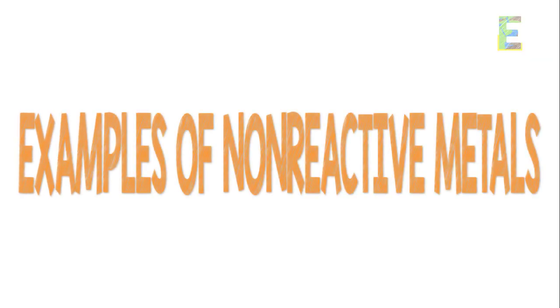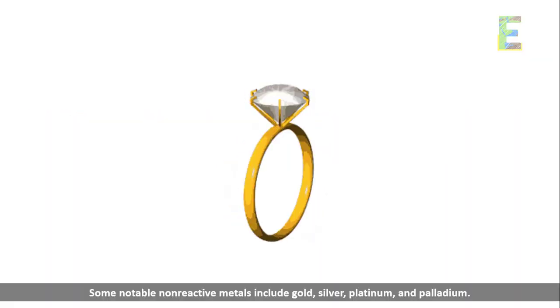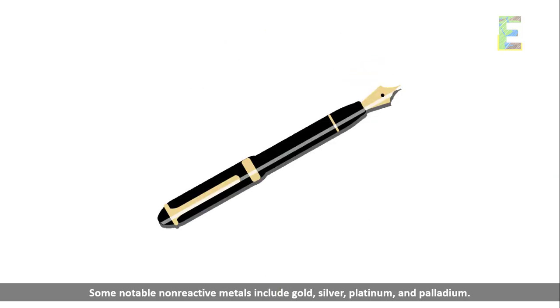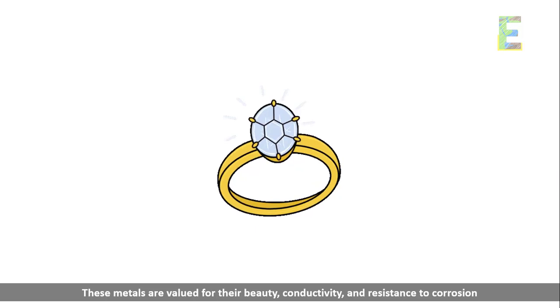Examples of non-reactive metals. Some notable non-reactive metals include gold, silver, platinum, and palladium. These metals are valued for their beauty, conductivity, and resistance to corrosion.